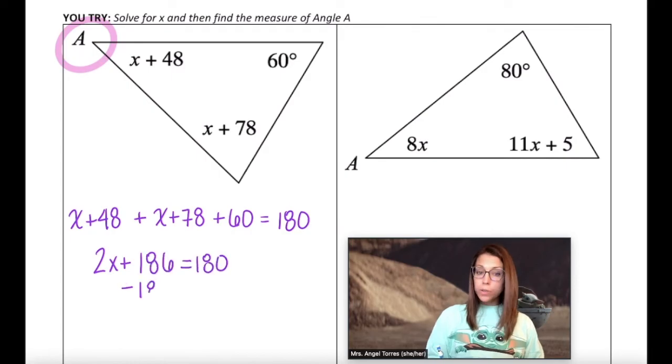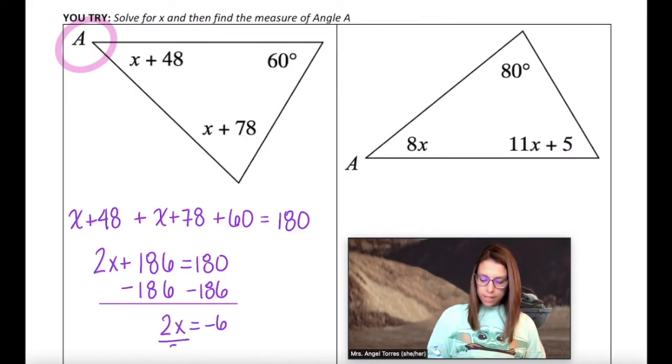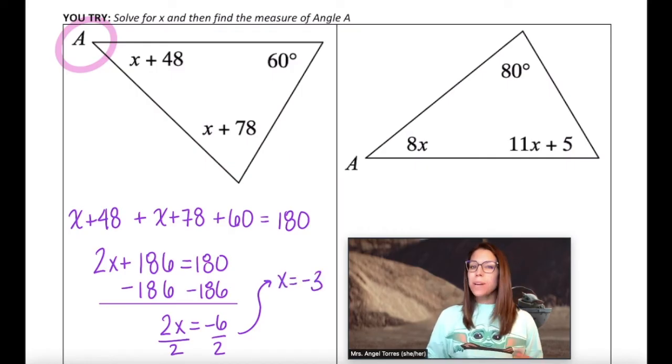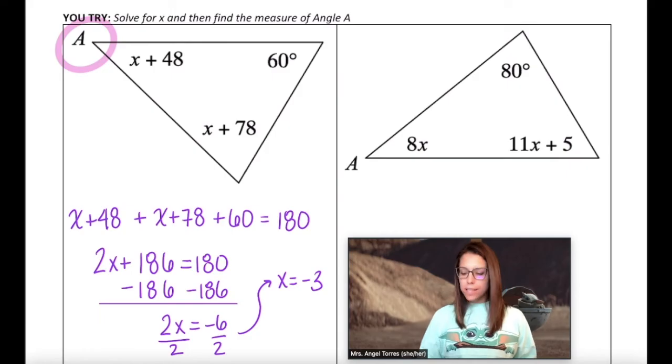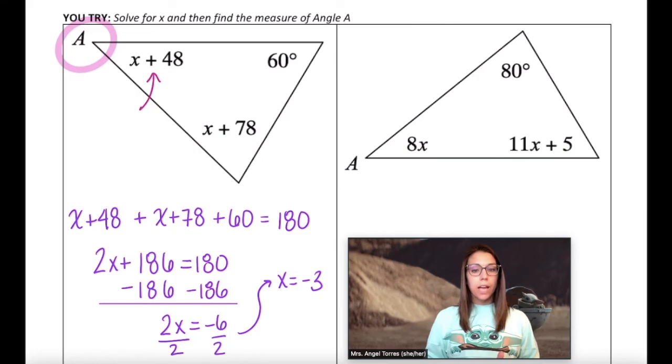Subtract 186 from both sides. 2x equals negative 6. Divide by 2 and x equals negative 3. But again, I'm not asked to find x. I'm asked to find the measure of angle A. So to find the measure of angle A, I'm going to plug in negative 3 for x. Negative 3 plus 48 is 45 degrees.